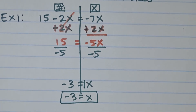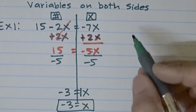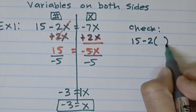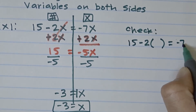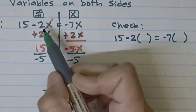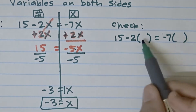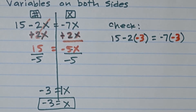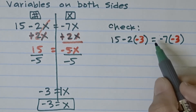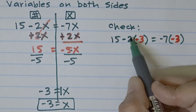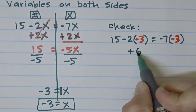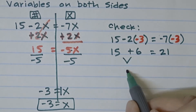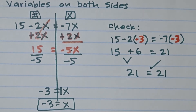To check the answer, we use what I call plug-in bubbles — you create parentheses wherever you see the variable x, then plug in the answer negative 3. Using order of operations: negative 2 times negative 3 is positive 6, and negative 7 times negative 3 is positive 21. Adding 15 and 6 gives 21 on the left, and 21 on the right — it checks out!